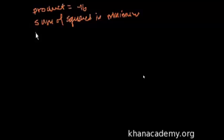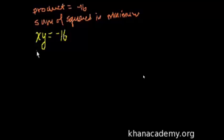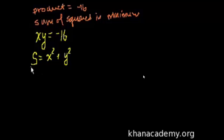Their product is minus 16, so we know that x times y is equal to minus 16. The sum of squares — let's call that s — is going to be equal to x squared plus y squared. This is the function that we want to optimize, and in this case we want to find the minimum value.